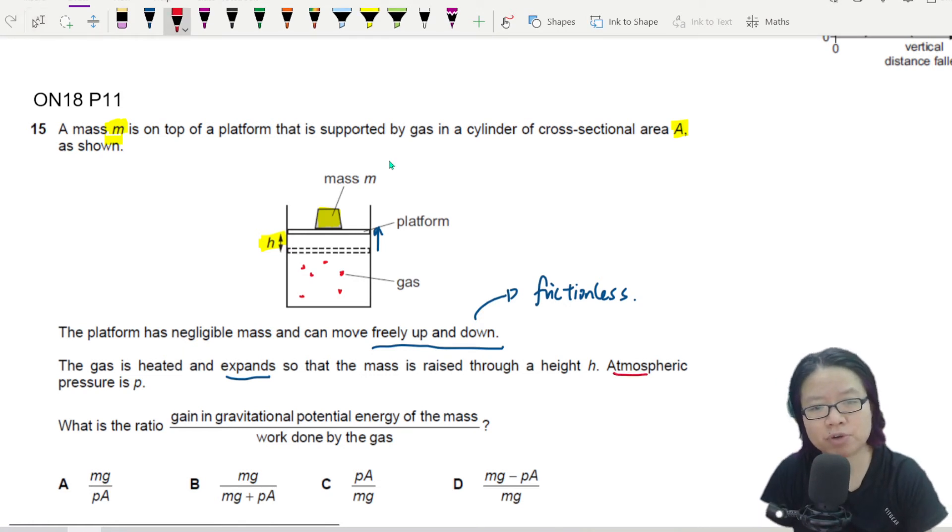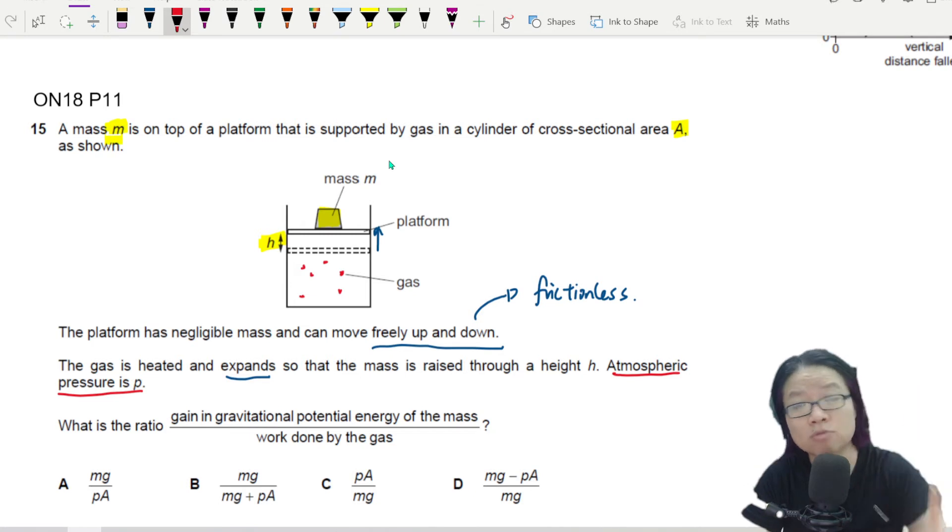The atmospheric pressure is P. So if you remember from the theory video, I mentioned before that if the piston is allowed to freely move up and down, the pressure inside must be the same as the pressure outside. The pressure will achieve some form of equilibrium, because the piston can adjust, or the platform can adjust accordingly.